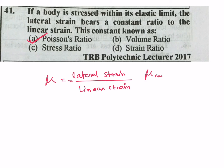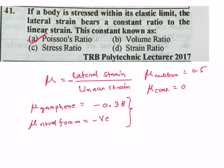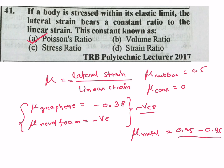For rubber, Poisson's ratio (μ) is 0.5. For cork, μ is 0. For graphene and novel foam, the μ value is negative — this is also important. For all common metals, the value is within 0.25 to 0.35.